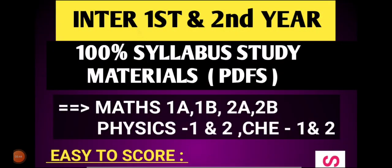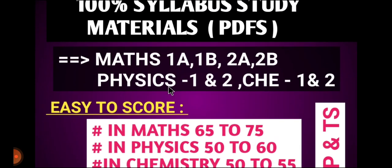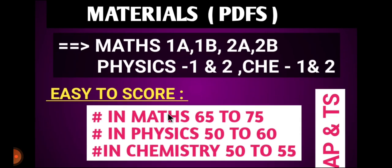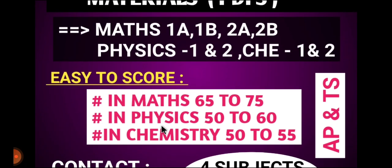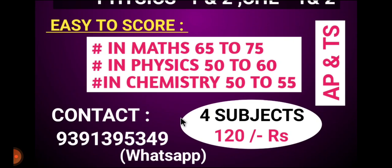Students, here is some information about first year and second year 100% silver study materials and PDFs. Maths 1A, 1B, 2A, 2B; Physics 1st year and 2nd year; Chemistry 1st year and 2nd year — all are available. Benefits: Maths 65 to 75 scores, Physics 50 to 60 scores, Chemistry 50 to 55 scores — full marks. Contact the number in the description. Four subjects for first and second year are 120 rupees. Send a message if interested.